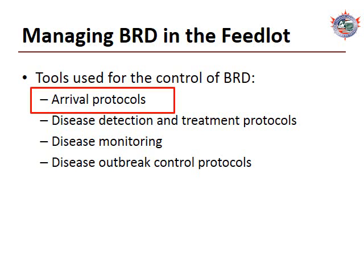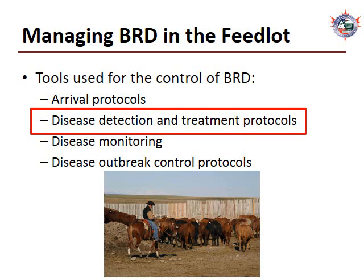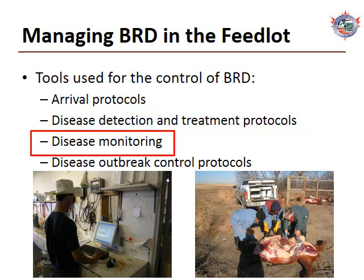Several tools are available for the control of BRD. Procedures and products administered at arrival processing should be tailored to the risk classification of each individual purchase group. Disease detection and treatment protocols should be appropriate given the risk factors of each group, including frequency and intensity of riding pens and sick animal therapy selection. The adoption of chute-side, cowboy-friendly software has greatly enhanced the ability to monitor disease events on the feedlot. Recording morbidity and treatment events, monitoring causes of death in all mortalities, and linking this information to each group at the individual animal level allows real-time monitoring and mitigation of economic losses associated with disease outbreaks.